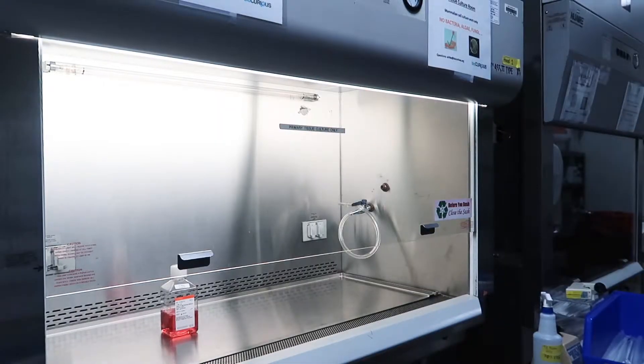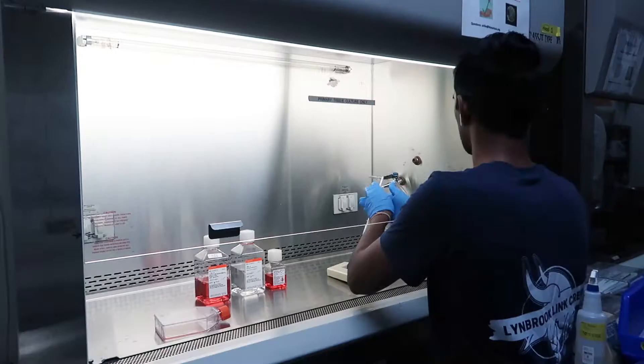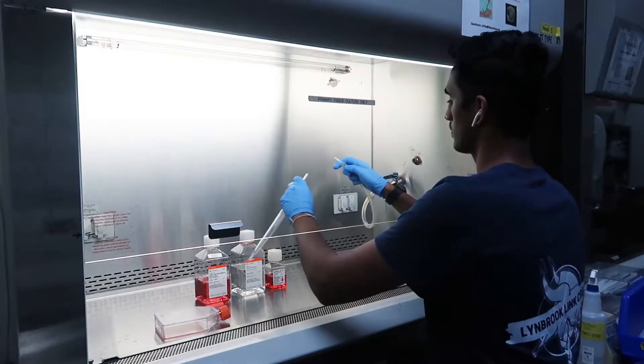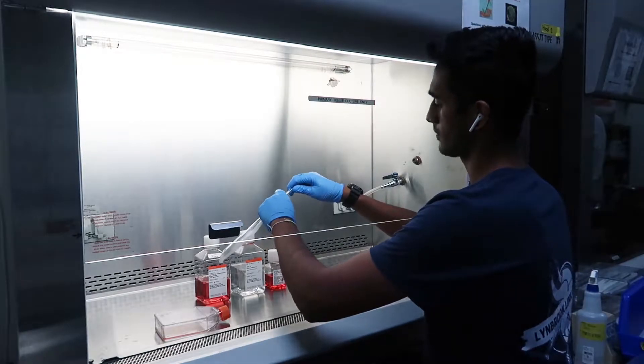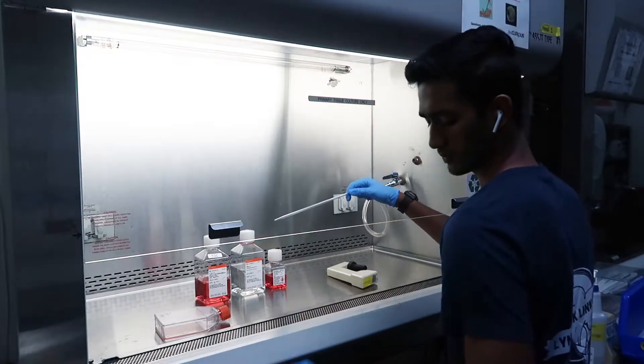Now before you start, your PBS, medium and trypsin EDTA should have been stored in a fridge. To make sure you don't shock your cells, make sure that you heat them to room temperature either using a water bath or leaving them out.